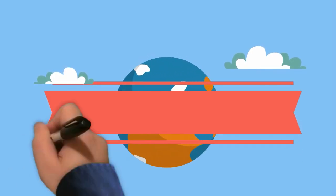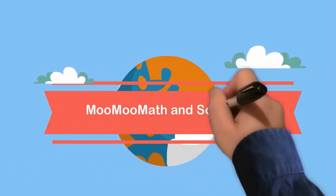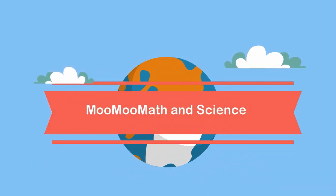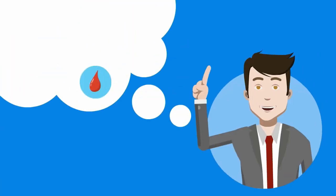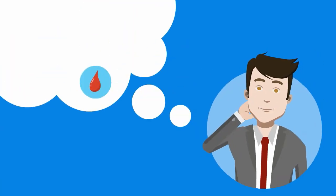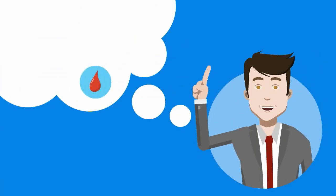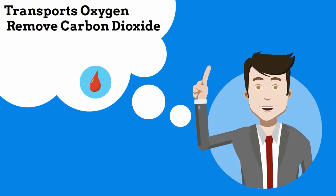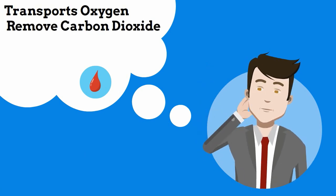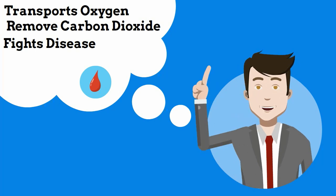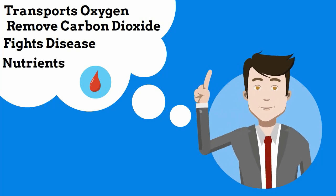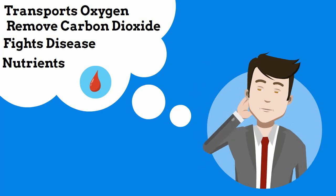Welcome to MooMooMath and Science. In this video I'd like to talk about the flow of blood through the heart. Blood is important to the body because it helps to transport oxygen to the cells, remove carbon dioxide, it helps fight disease, delivers important nutrients, and several other functions that help keep us alive.